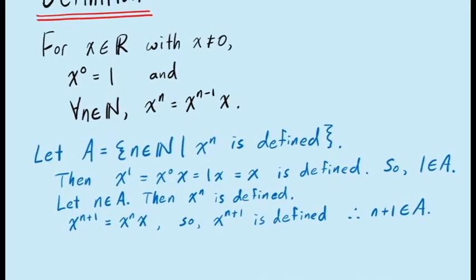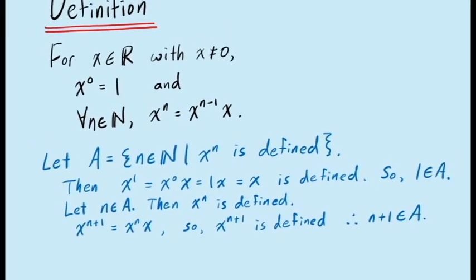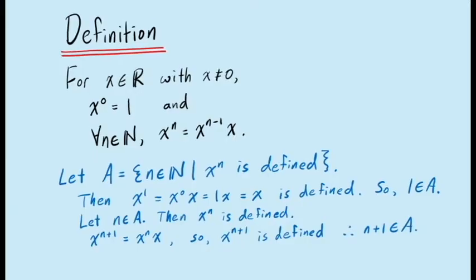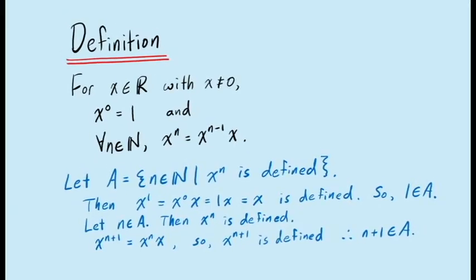Since the set A is an inductive set containing the number 1, the principle of mathematical induction tells us that all natural numbers are in the set, and so x to the power n is defined for all natural numbers. Since this concept is defined recursively, it is particularly well-suited to proofs using the principle of mathematical induction. To see how this works, let's prove a few of the basic properties of exponents.